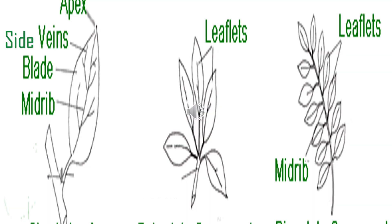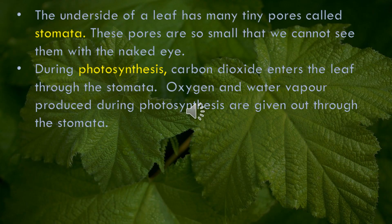Here you can see the parts of a leaf: side veins, apex, and leaf blade. The underside of a leaf has many tiny pores called stomata. These pores are so small that we cannot see them with the naked eye.